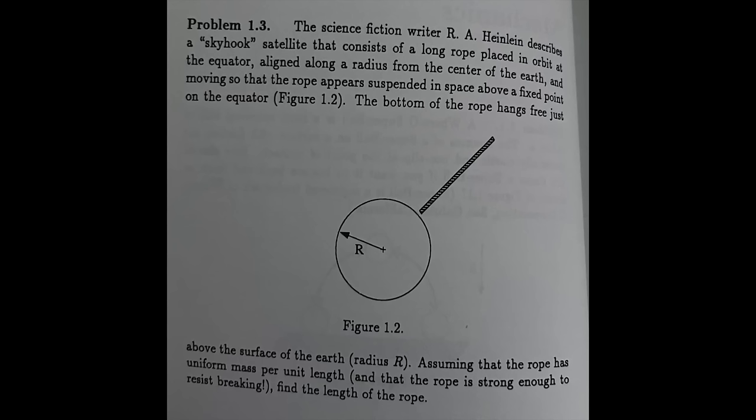I'm going to do, in case you're reading along, a dynamics problem 1.3. Let me read it to you. The science fiction writer R. A. Heinlein describes a skyhook satellite that consists of a long rope placed in orbit at the equator aligned along a radius from the center of the earth and moving so that the rope appears suspended in space above a fixed point on the equator, figure 1.2. The bottom of the rope hangs free just above the surface of the earth, the radius R.